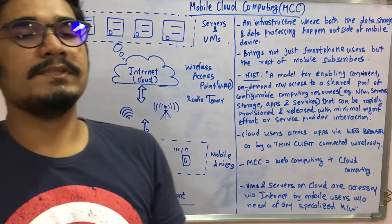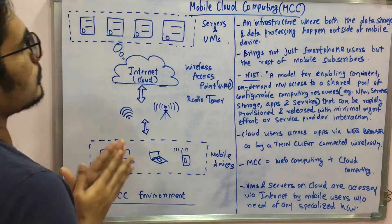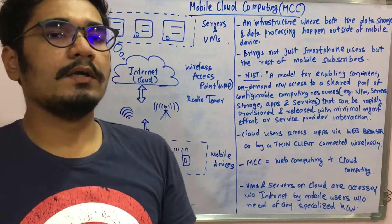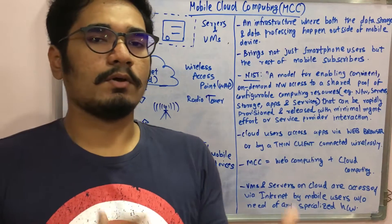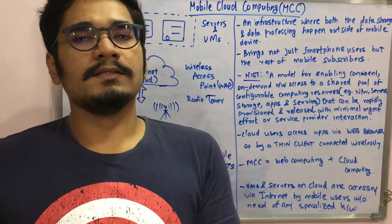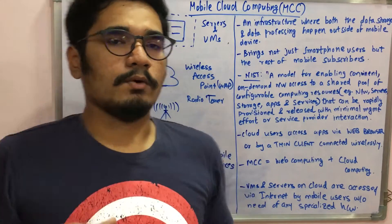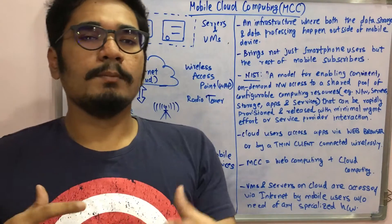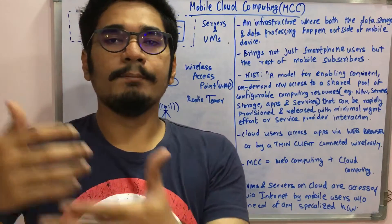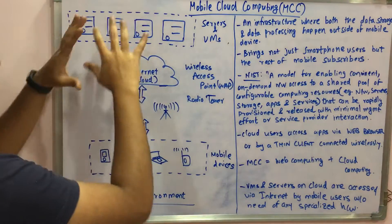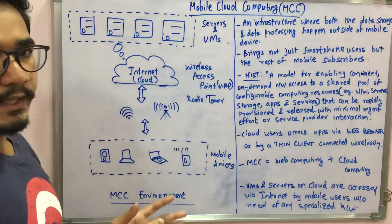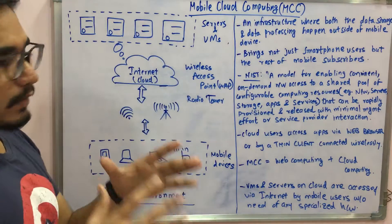Let's start with the environment of MCC and how it looks. We have some servers and VMs which are hosted not at the data center but somewhere on the cloud. We cannot move entirely all the applications or equipment to the cloud — some which are crucial are kept at the data center, and some which take more computing power are kept on the cloud. So it's a kind of ratio: which applications should be moved to the cloud and which should be kept at the data center.